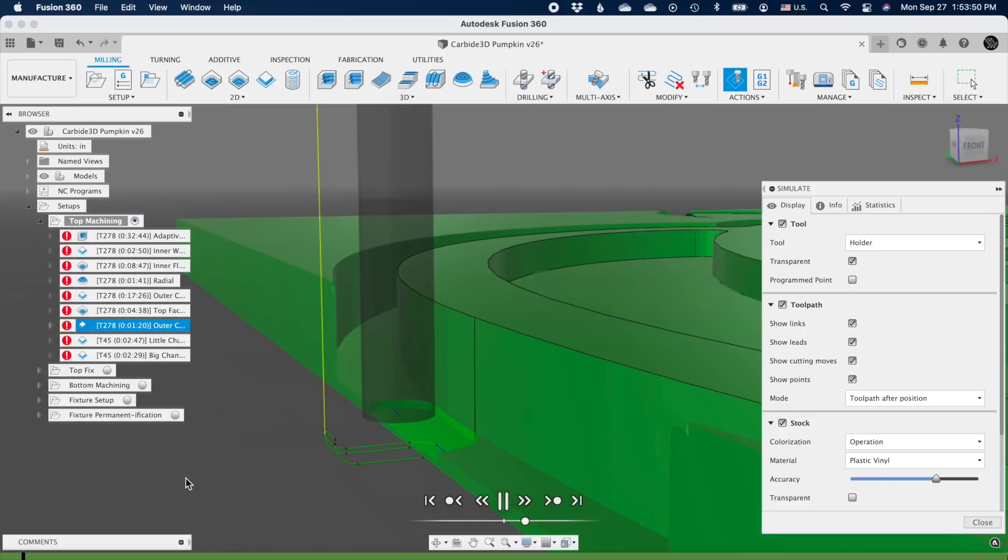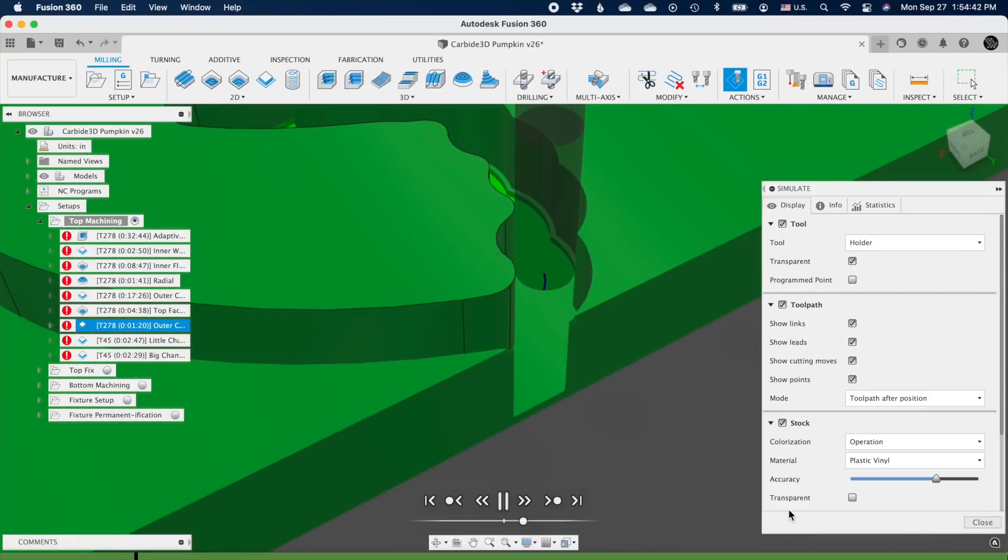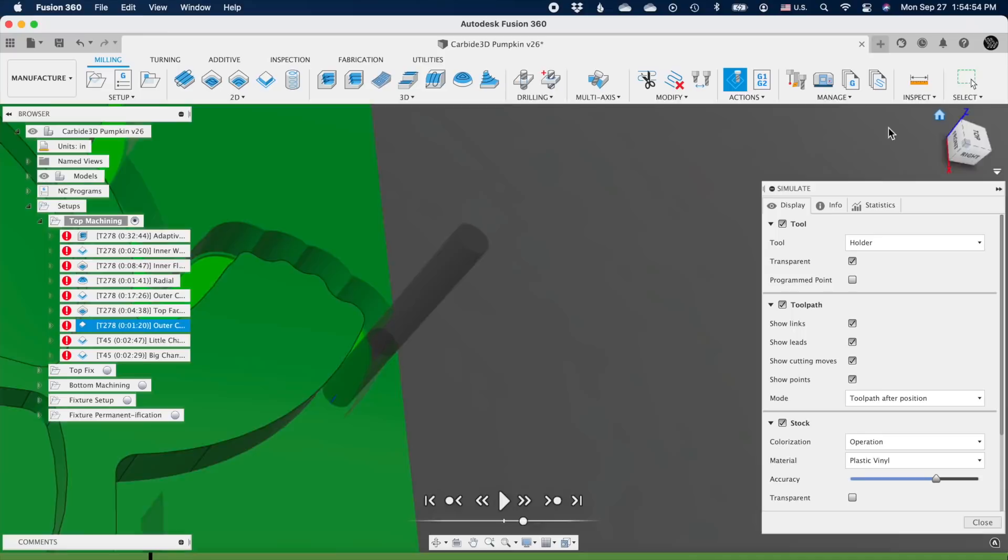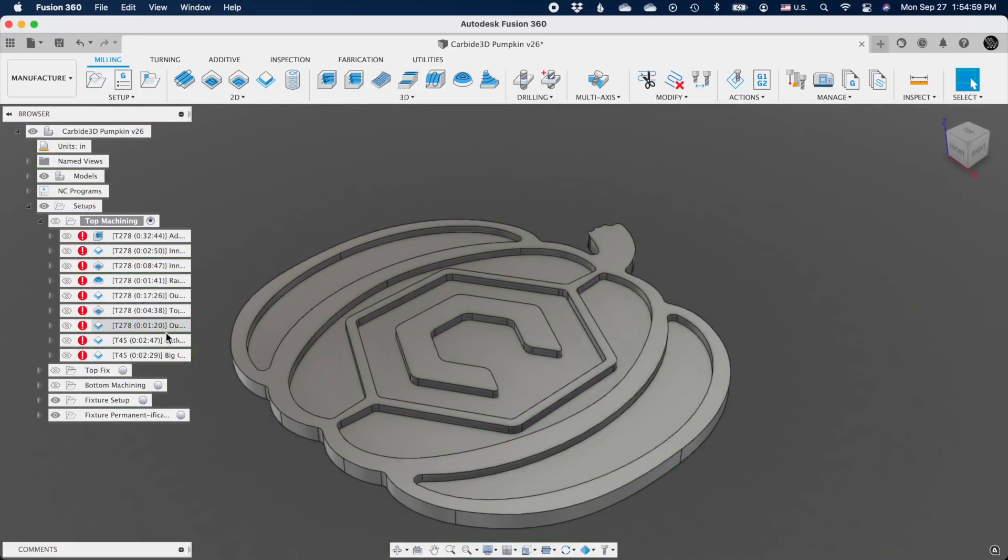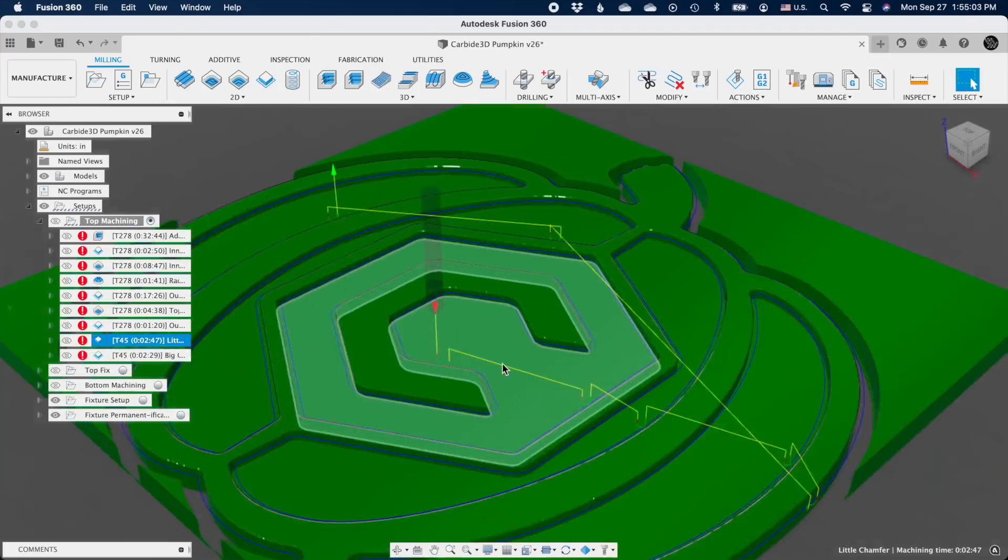This will allow the tool to cut that last 3 quarters of a millimeter of material without rubbing against the walls of the stock above. This not only means less friction and less force on the pumpkin, which will be held down by only double-sided tape at this point, but also less force on the corner pieces of my stock, which I don't want to come loose and jam the cutter or get thrown off the machine. With the pumpkin liberated and the excess stock removed, I can come back and carefully break all the edges with a chamfering toolpath. Let's see this in practice.